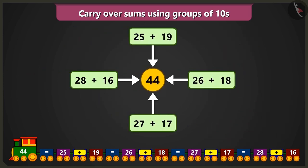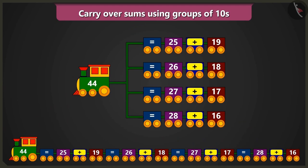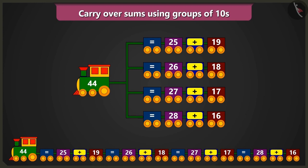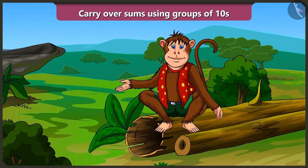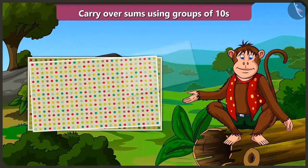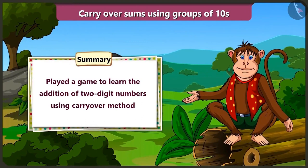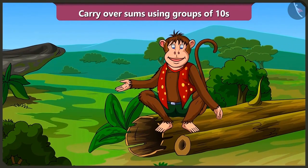So in this way, in my train, all the numbers add up to 44. This game is such fun! Friends, today we learned to play a game related to the addition of two-digit numbers using carry over. You can also play this game by adding different numbers and get similar results. In the next video, we will learn how to borrow and subtract two-digit numbers.